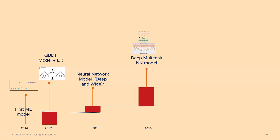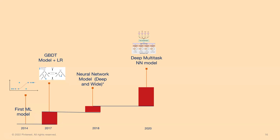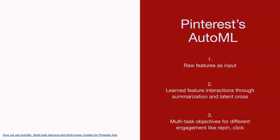Between 2018 and 2020, Pinterest spent considerable time revamping its models and changing the methodology of how we train and serve them. This took about two years because we were re-architecting the model while still working on the existing stack. This is what Pinterest calls AutoML — different from the industry's AutoML — with three characteristics: first, instead of handcrafted feature engineering, it takes raw inputs as features; the feature engineering component is now handed over to the model itself. These models can also train for multiple objectives simultaneously.